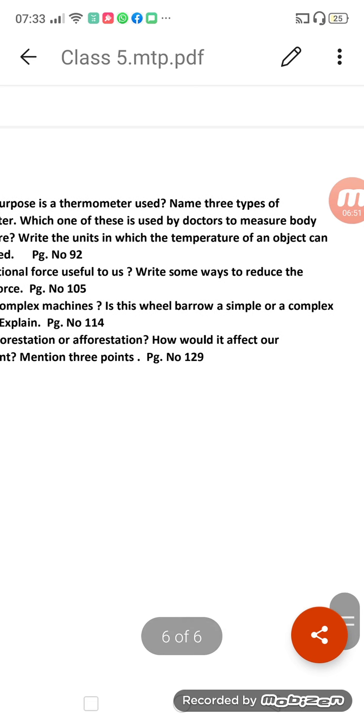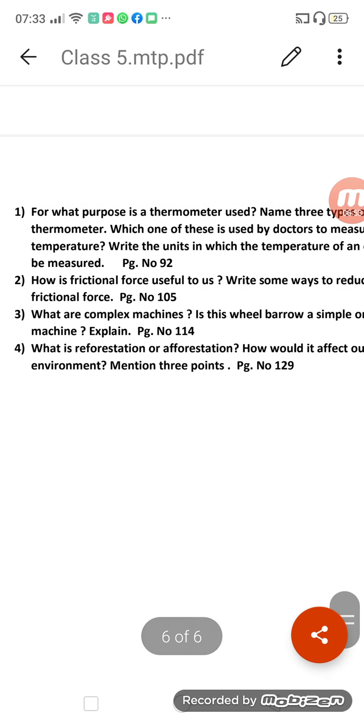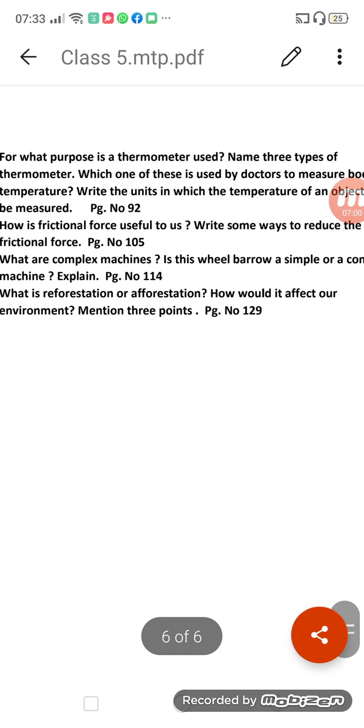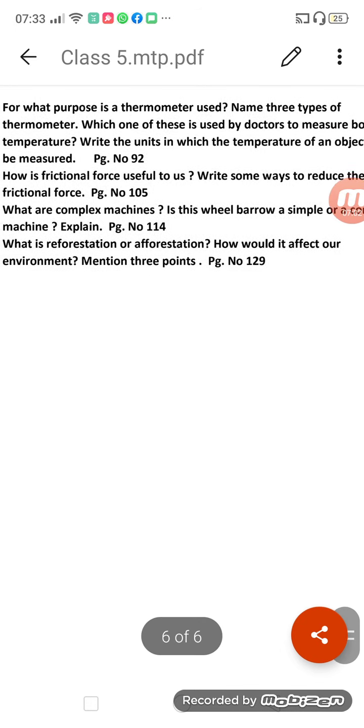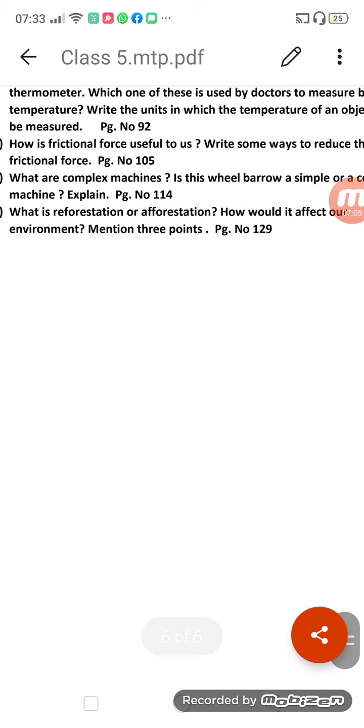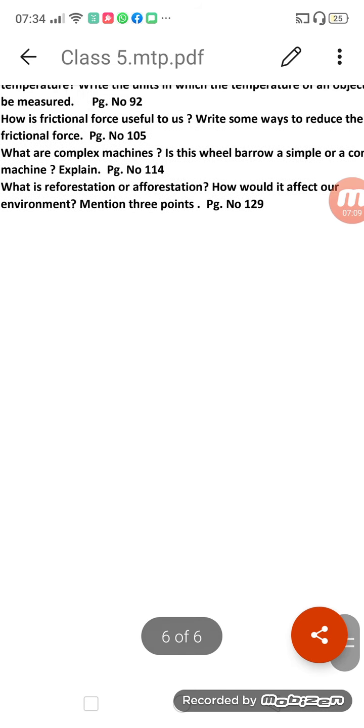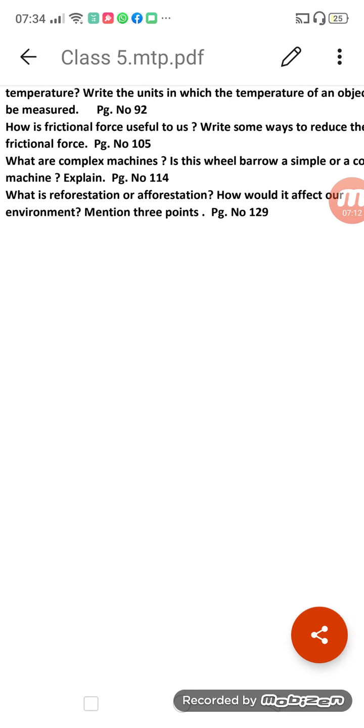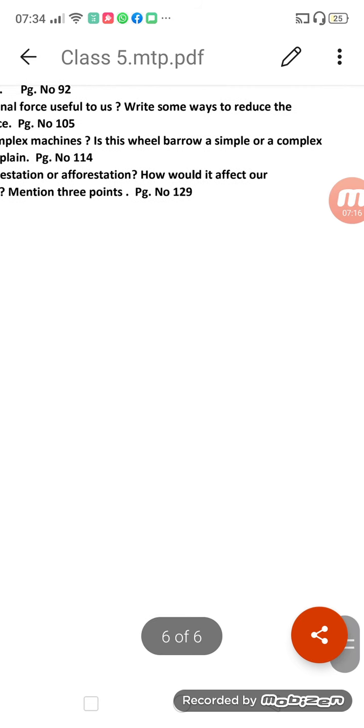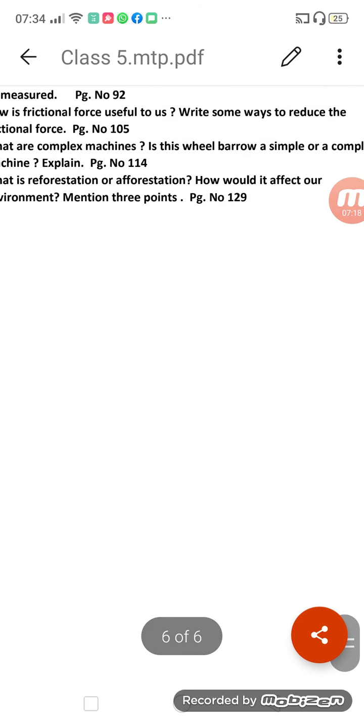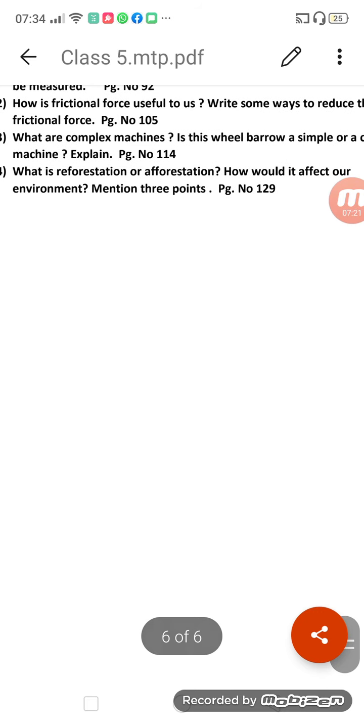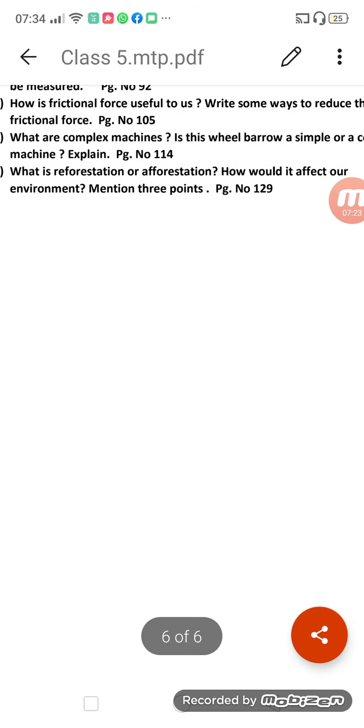Body temperature - if we have to measure, then which kind of thermometer is used by us? And then you have to write down the unit in which temperature of an object can be measured. And this question is on page number 92. Then second question: How is frictional force useful to us? Friction force is useful - write some ways to reduce the friction. How we can minimize the frictional force? What are complex machines? Is this wheelbarrow simple or a complex machine? First you have to write down what are complex machines, then you have to tell whether wheelbarrow is a simple or a complex machine.